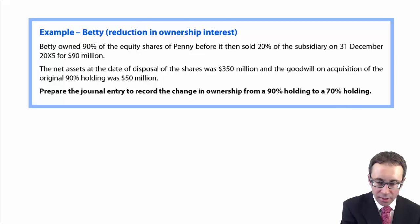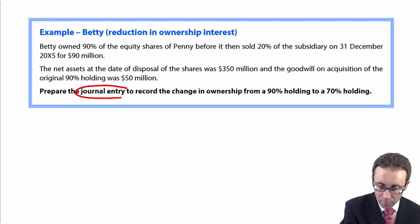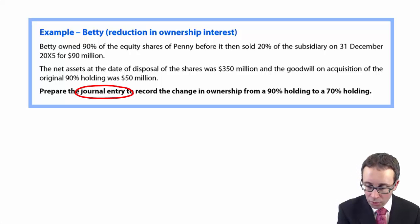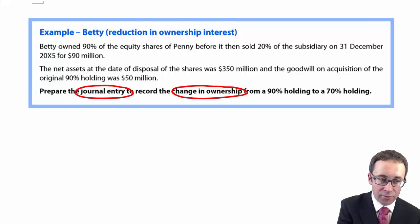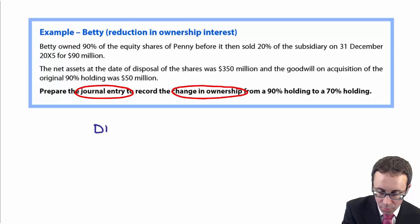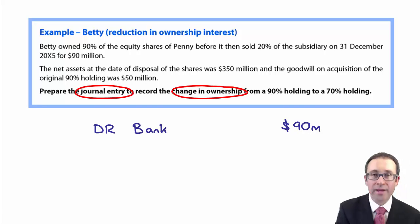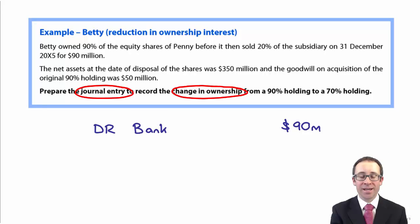Let's see how we get on with the example called Betty. It says prepare the journal entry to record the change in ownership from 90% to a 70% holding. Betty owned 90% before it then sold 20% for 90 million. So we will debit our bank with the 90 million dollars. Cash has gone up. So therefore, we are going to increase our assets.